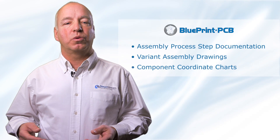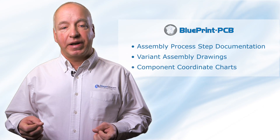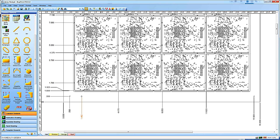Use Blueprint for component coordinate charts. Use assembly panel design features to design and document custom assembly panels with mill tabs, web routes, pinning holes, and fiducials.